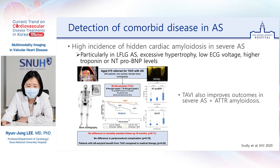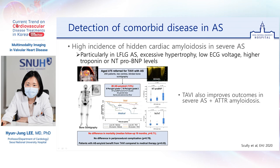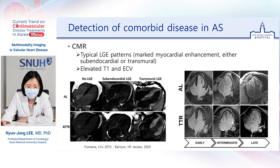Multimodality imaging techniques can also be used to detect comorbid disease in aortic stenosis, specifically cardiac amyloidosis. Recent studies are showing that there is a high incidence of hidden cardiac amyloidosis in severe AS, and it should be suspected in patients with low-flow, low-gradient AS, excess hypertrophy, low ECG voltage, or higher troponin or amyloid P levels. One recent study showed that 13% of patients over the age of 75 who are referred for TAVI with AS had ATTR cardiomyopathy according to bone scan results. TAVI improved outcomes in severe AS patients with ATTR amyloidosis as well. To detect cardiomyopathy in AS, CMR and bone scintigraphy are useful.